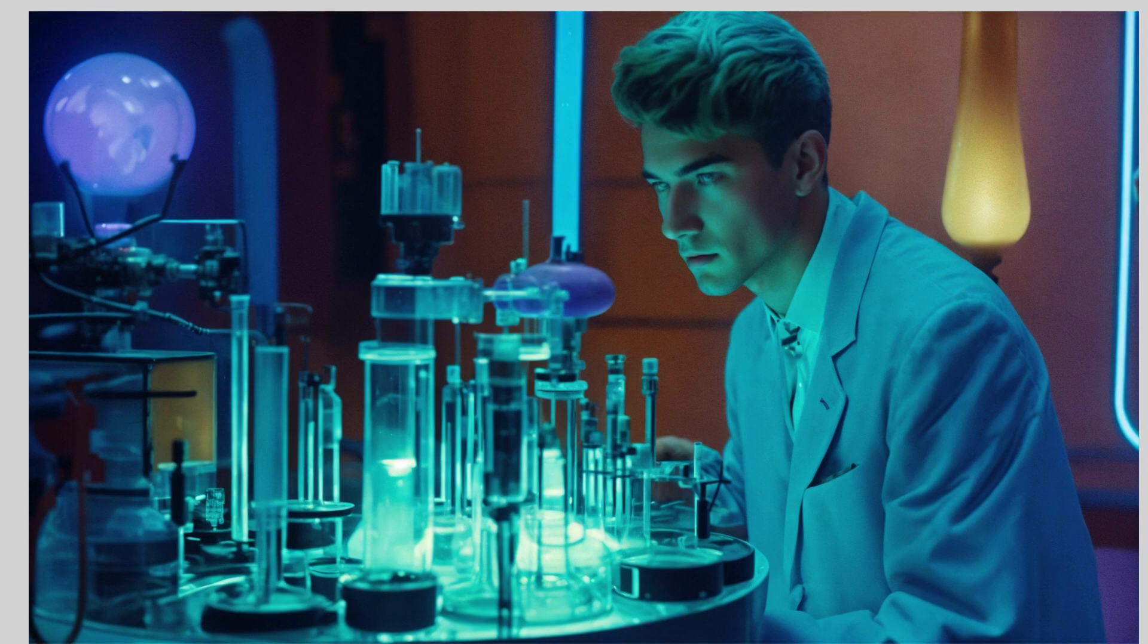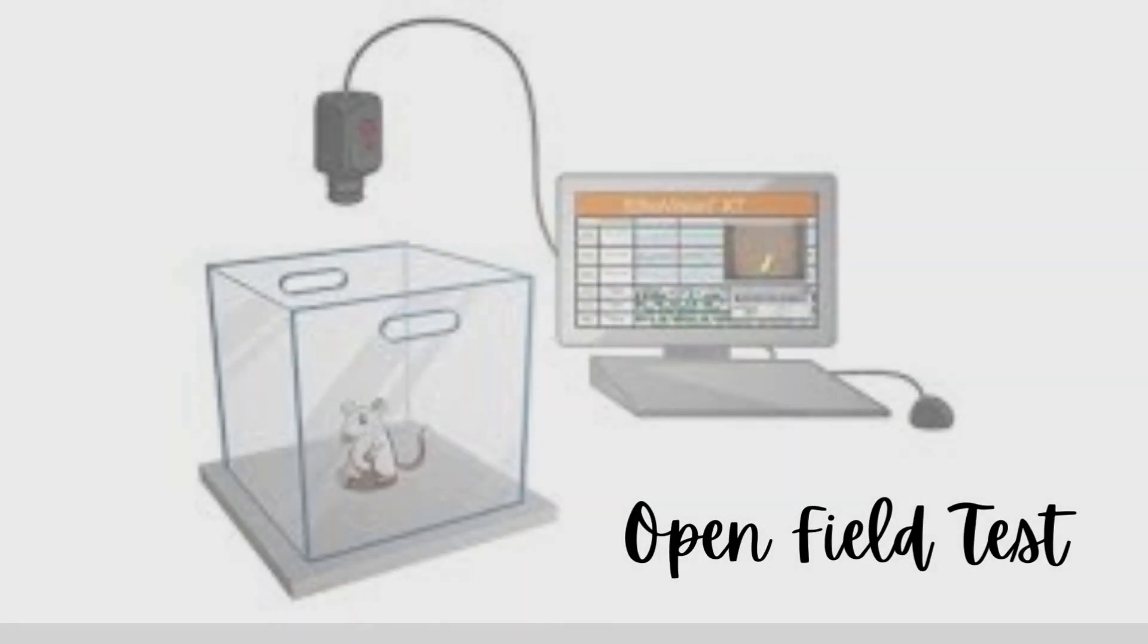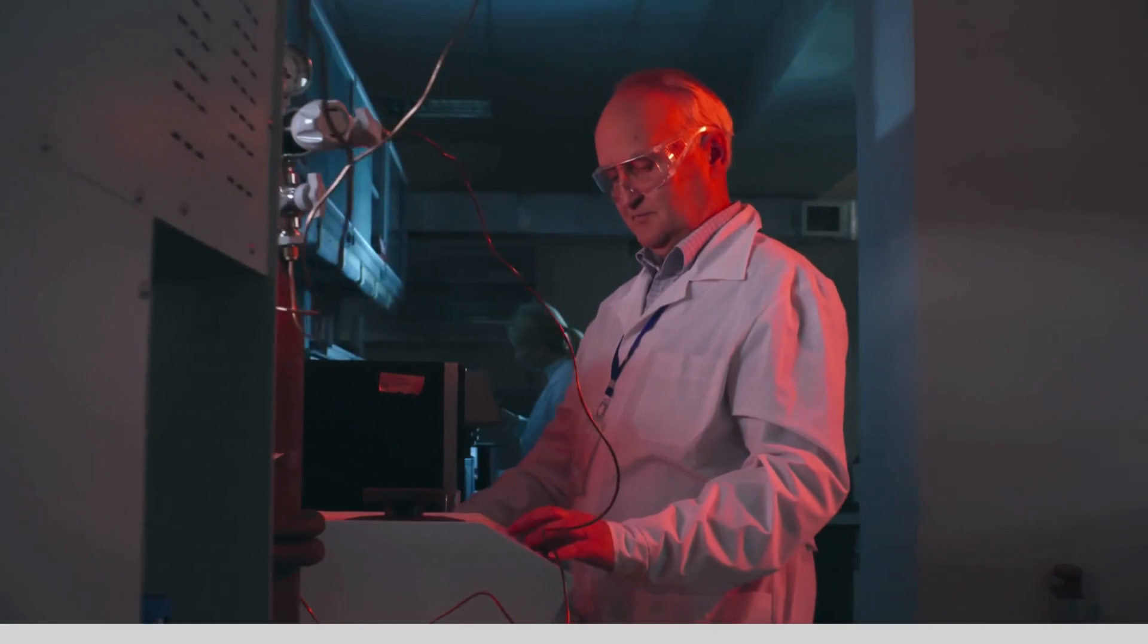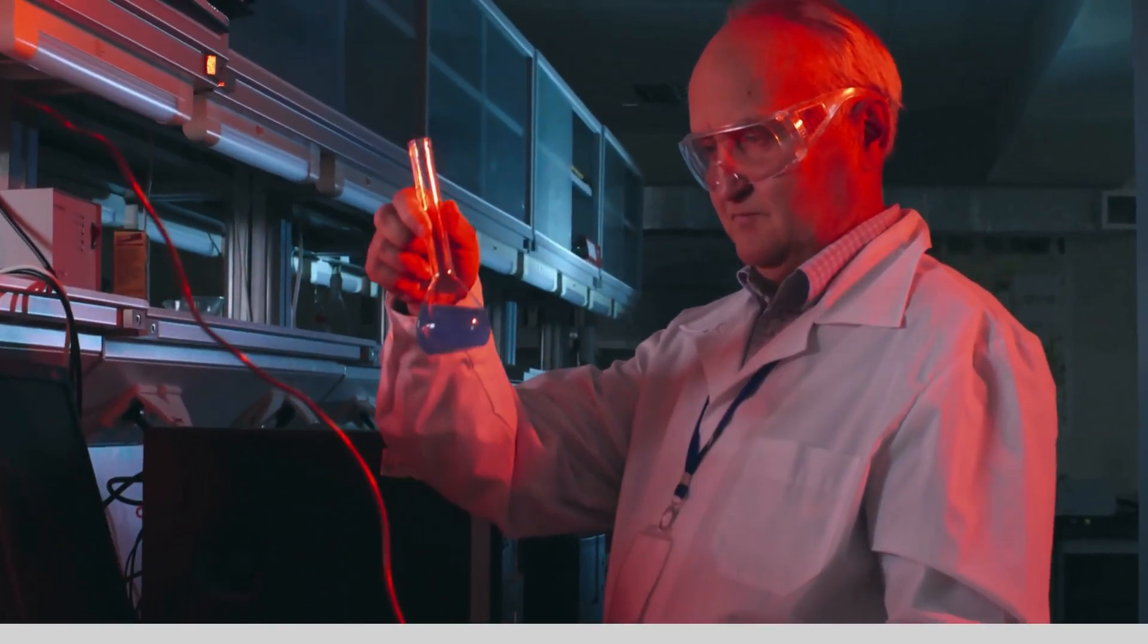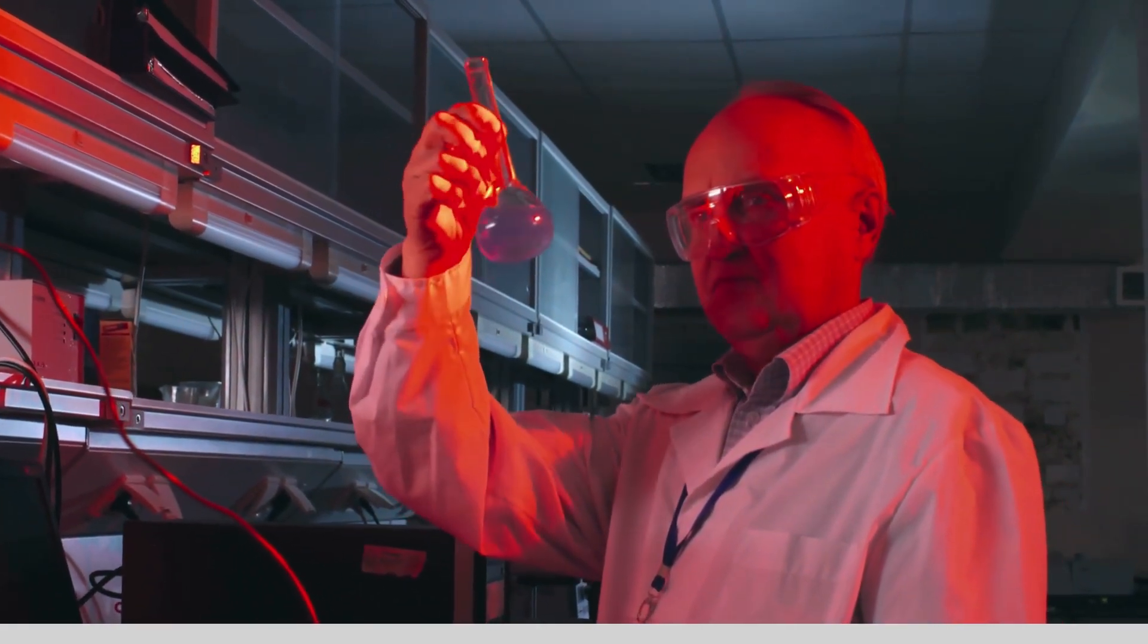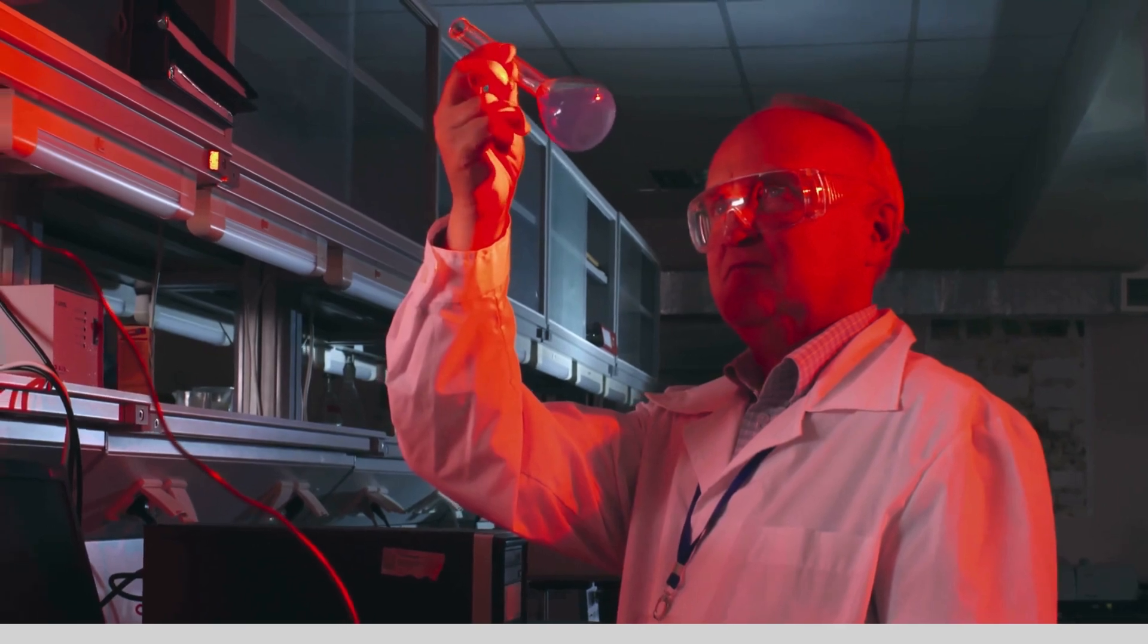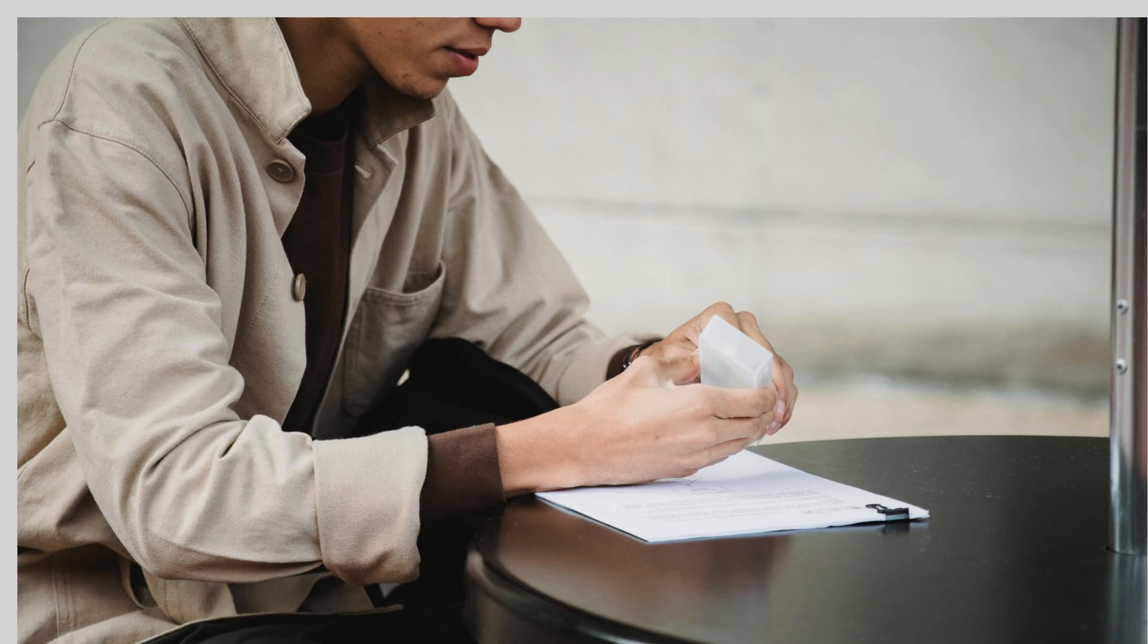B. Open field test: Purpose - the open field test is used to measure anxiety-like behavior and exploratory behavior in rodents. Method - the animal is placed in a large open arena and its movements are tracked. Increased time spent in the center of the field suggests reduced anxiety, while staying close to the walls indicates anxiety-like behavior. Application - widely used for testing the anxiolytic effects of drugs like benzodiazepines and antidepressants.